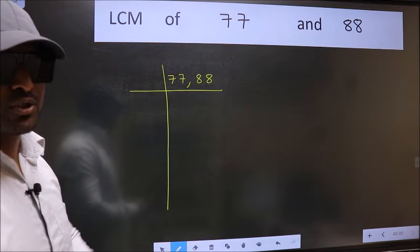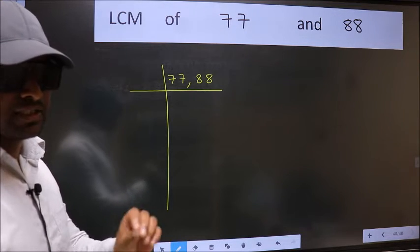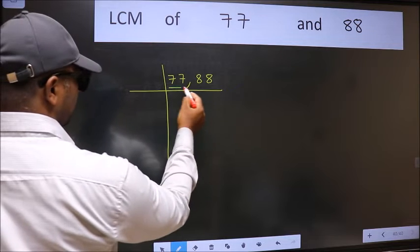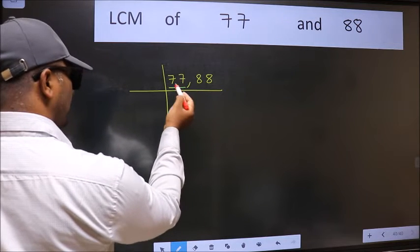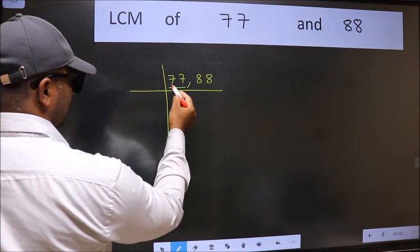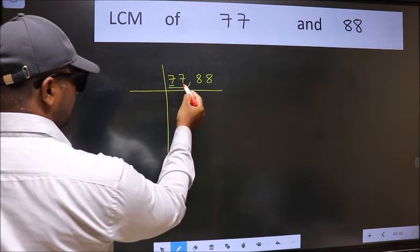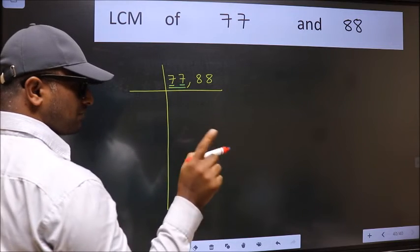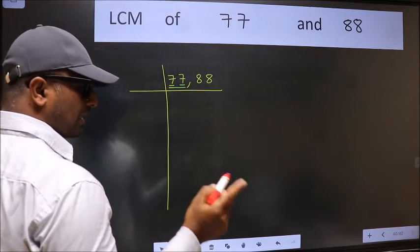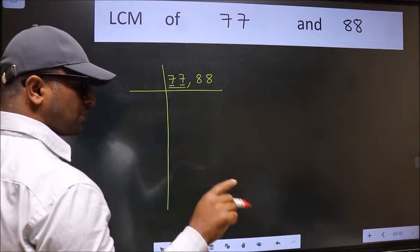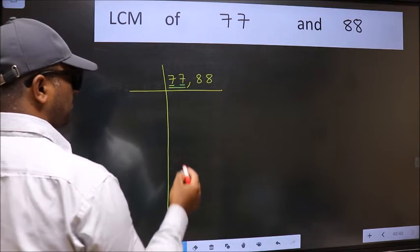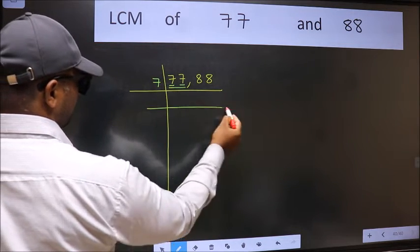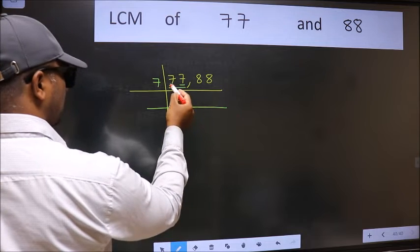Now you should focus on the first number, which is 77. Observe this number — each digit is 7, so this number is divisible by 7. And most importantly, 7 is a prime number. So take 7 here as the first number.